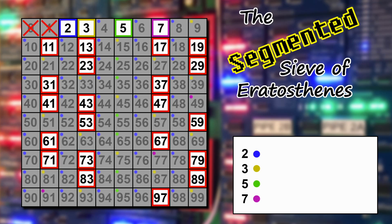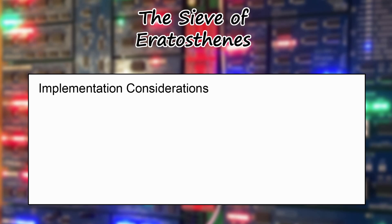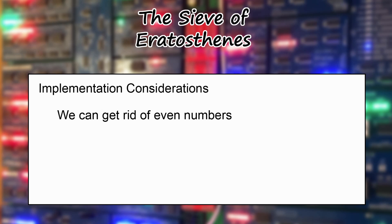Let's pause and talk about some implementation considerations — especially relevant if you're doing this in assembly language. First, we can easily eliminate even numbers. Only the first prime is even, which is 2, and then we spend significant time crossing out all multiples of 2 for each segment. We can just ignore that: I manually output 2 as a small hack, and then during the strike-out phase for other primes I added two times the prime number rather than one. That lets us skip all the even multiples, making the whole thing much quicker.